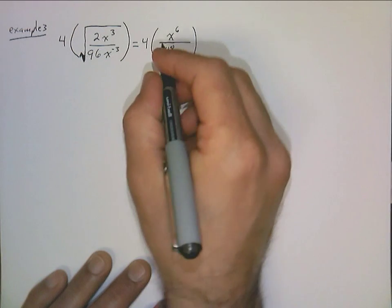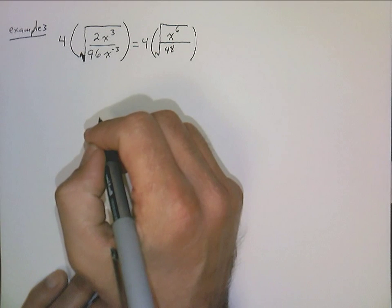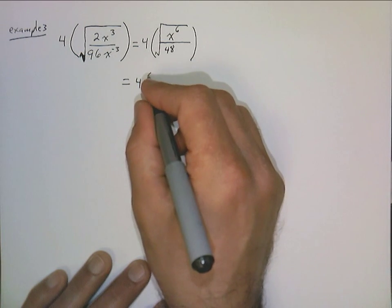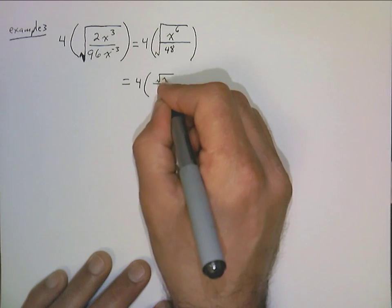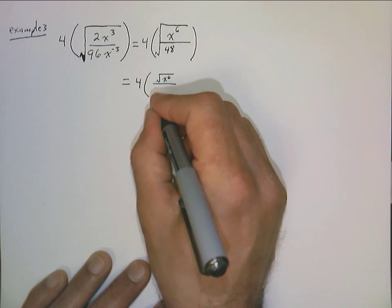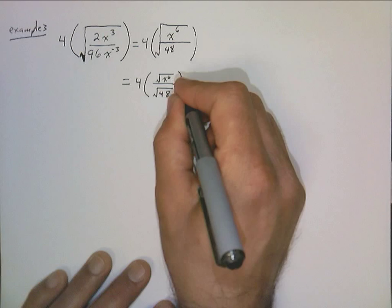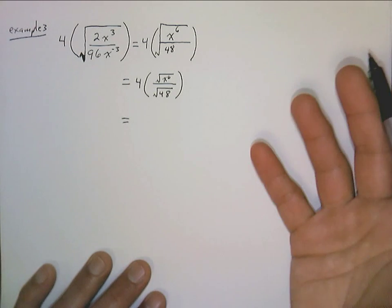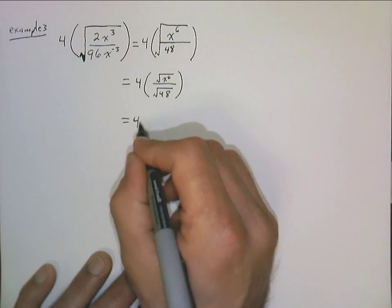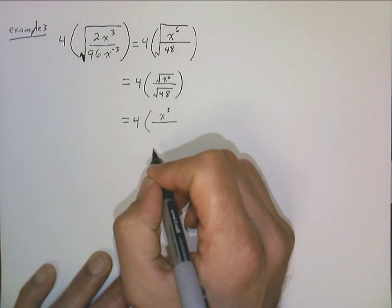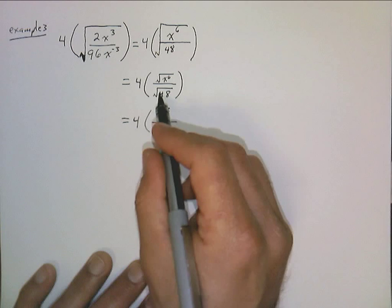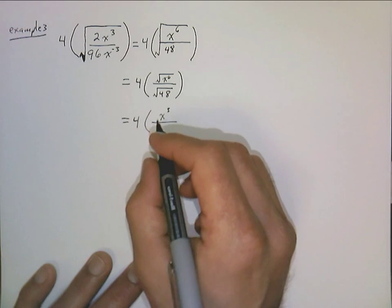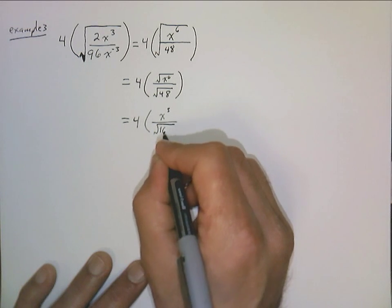Now we're going to split up this radical between the numerator and the denominator using the division property for square roots. We still have 4 times, then the square root of x to the 6th on top and the square root of 48 on the bottom. Taking the square root of x to the 6th — what do we need to square to give us x to the 6th? That's x cubed. Now, 48 has a perfect square factor in it — if you're clever, you'll notice it's 16 — so I can rewrite the square root of 48 as the square root of 16 times 3.